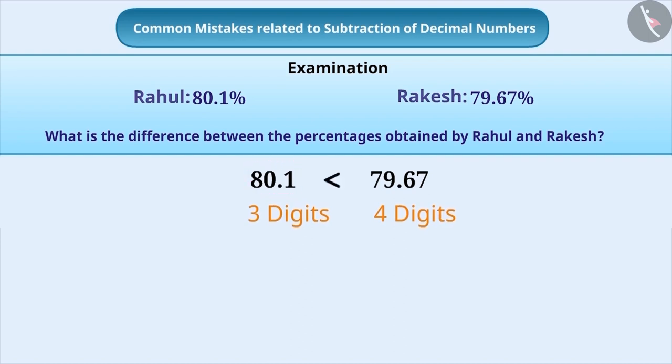With this understanding, they try to subtract 80.1 from 79.67, which will give an incorrect answer.